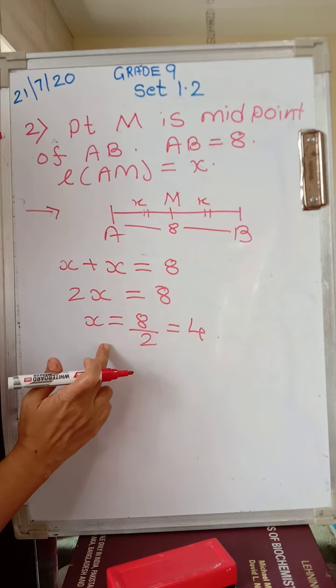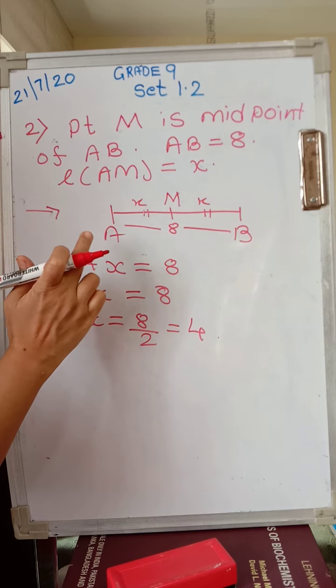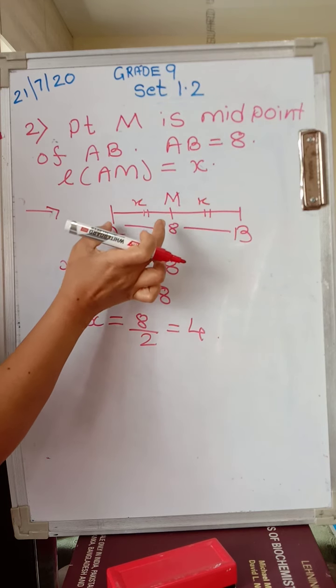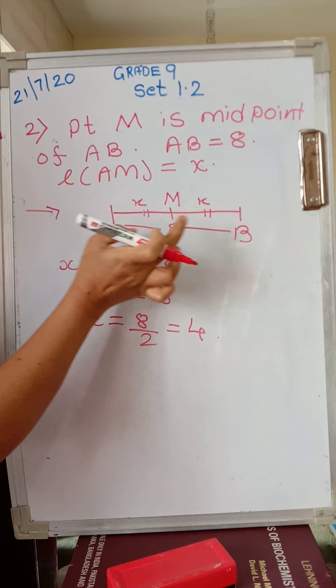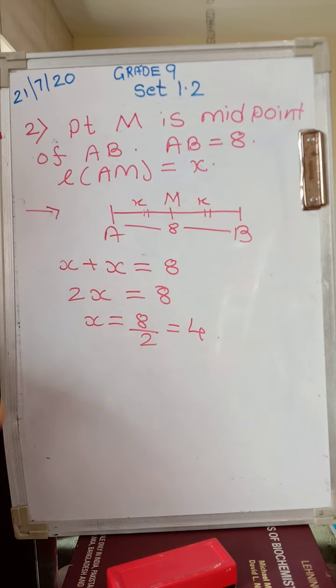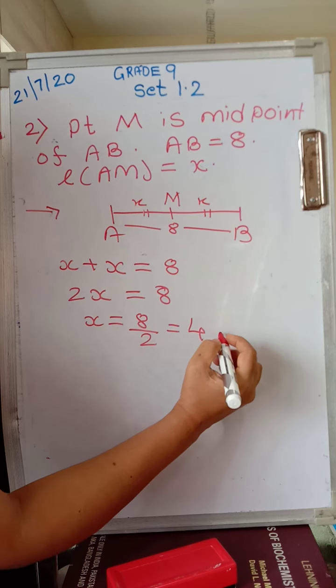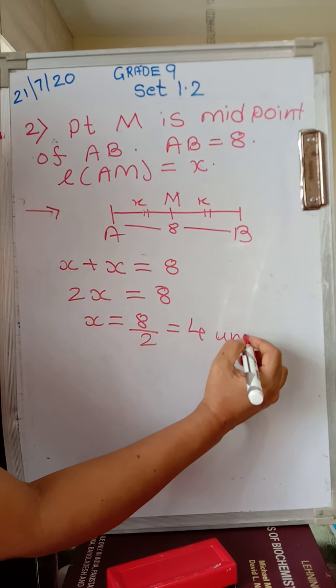But before writing this directly, you need to mention what is given. Because M is the midpoint, you should write that AM equals MB equals X. So this is your answer, 4 units.